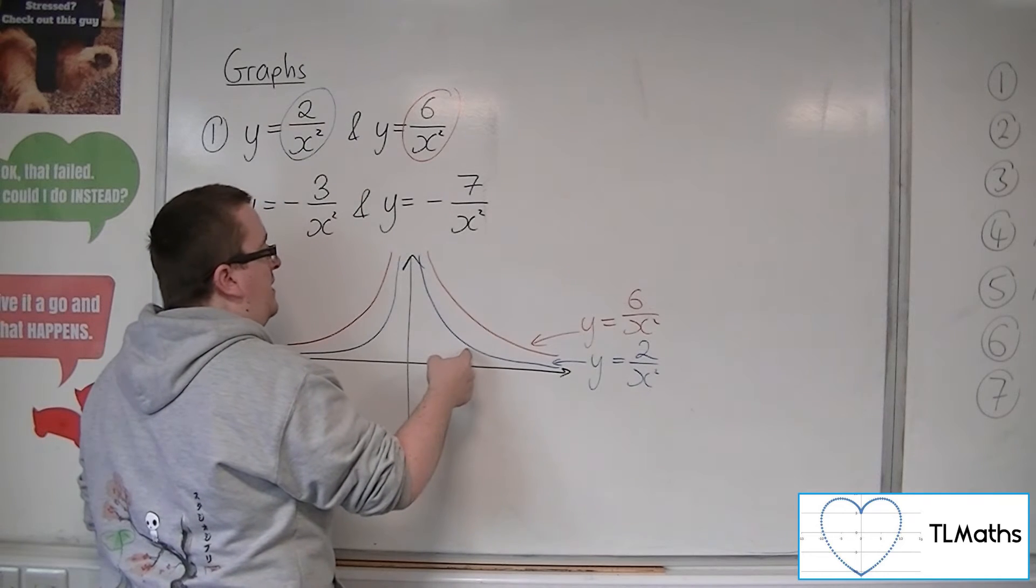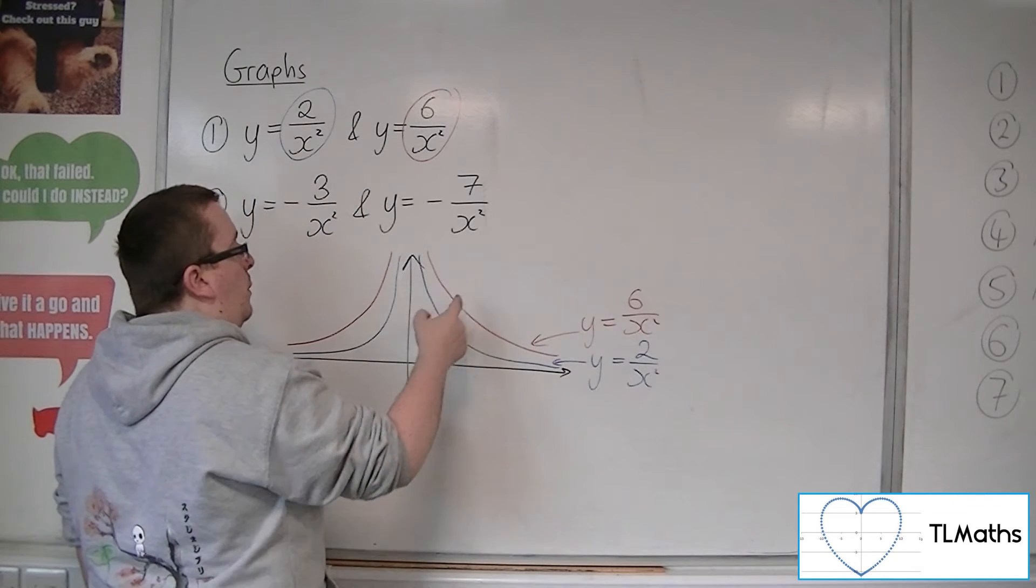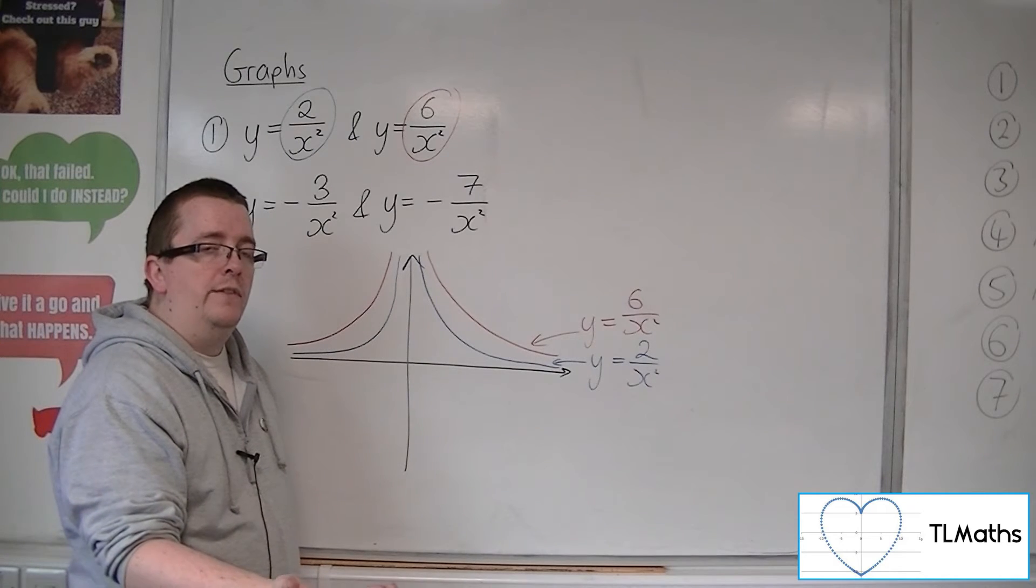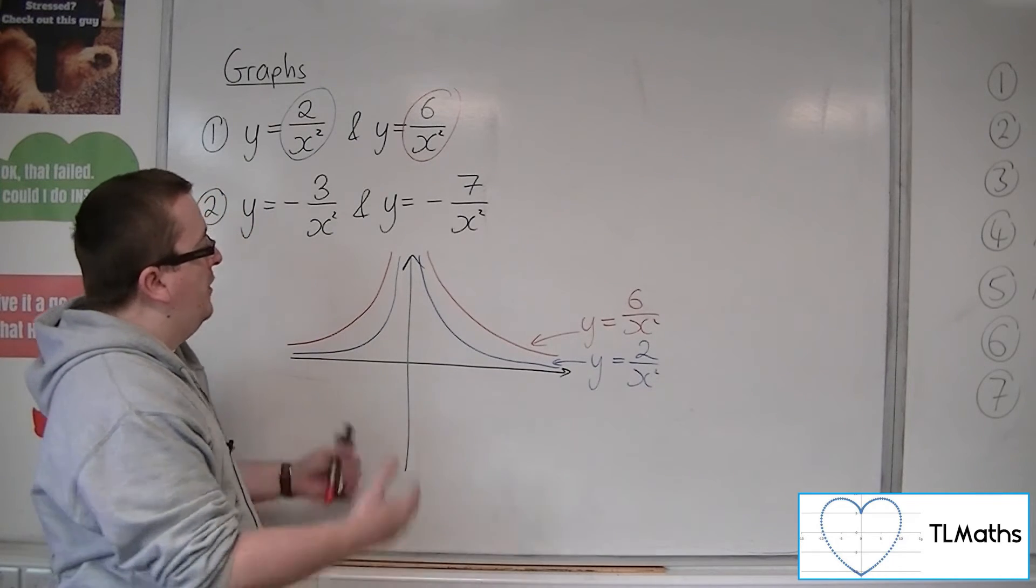So whereas that might be 2 and that might be 6, you are at that point. So you could draw a point onto the graph if you like as well. So that's the first one.